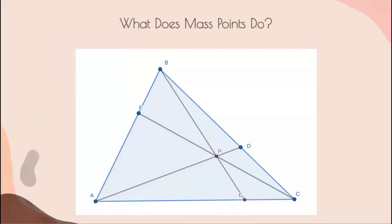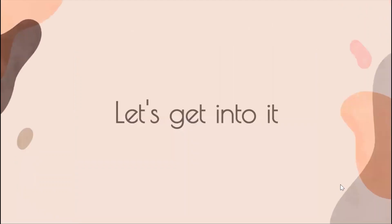Before we start, let's just see what mass points does. On a higher level, mass points basically gives you this. If you have a triangle, and you have points from the vertices to the other sides of the triangle, then you get information on the ratios between all of these lengths. Okay, so now let's get into it.